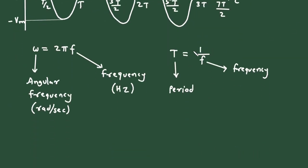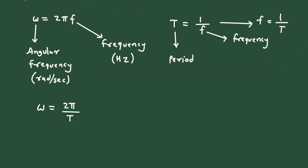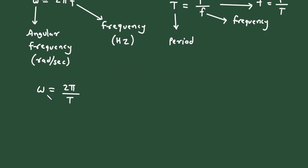If we substitute 1 upon T in place of f, then omega is equal to 2π by T. In place of f we substitute 1 by T, so f is equal to 1 upon T. We can also say that T is equal to 2π by omega.